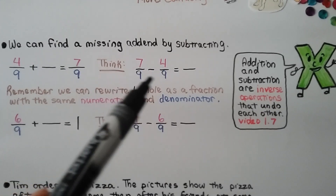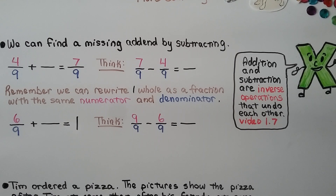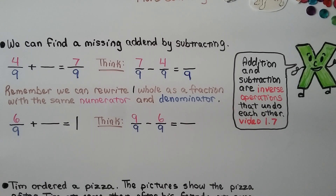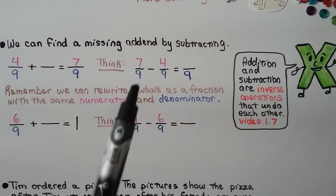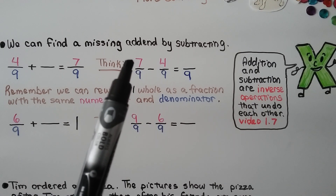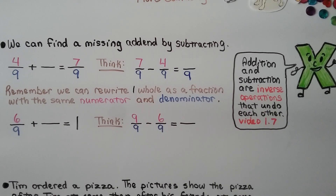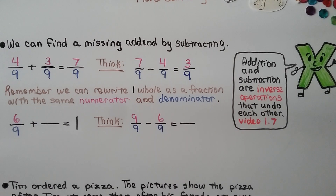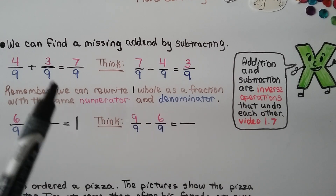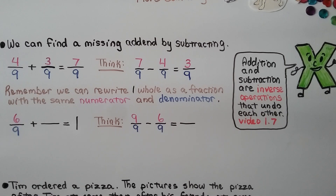Because they have like denominators, we know the denominator of the difference will be 9. We look at the numerator: 7 minus 4 gives us 3. The difference is 3 ninths, so we know the missing addend is 3 ninths. And remember, we can rewrite 1 whole as a fraction with the same numerator and denominator.